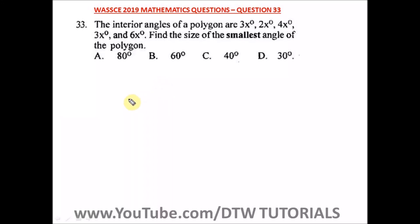Question 33 of the WAEC 2019 Mathematics past question. It says the interior angles of a polygon are 3x degrees, 2x degrees, 4x degrees, 3x degrees, and 6x degrees. Find the size of the smallest angle of the polygon.